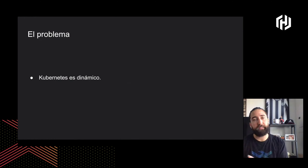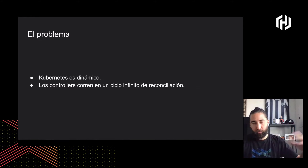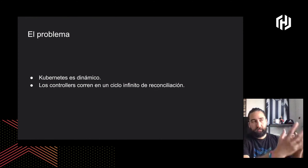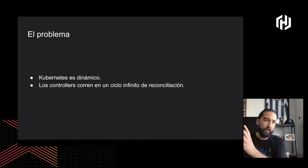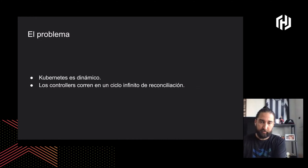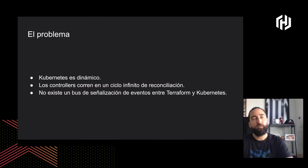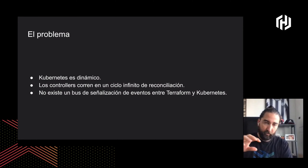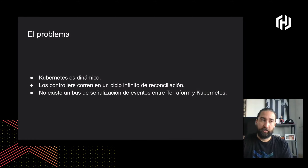Por otro lado, Kubernetes es más dinámico. Está basado en controllers continuos: es un conjunto de controladores que corren en un ciclo de reconciliación. Yo declaro mis recursos con cierta estructura en YAML y hay controllers que toman ese YAML, lo interpretan y crean los recursos reales: contenedores, volúmenes, red, etc. Además, no existe un canal o bus de señalización entre Terraform y Kubernetes, es decir, no hay manera nativa de que un Terraform apply lo comunique a Kubernetes ni de que Kubernetes pregunte a Terraform si hay cambios.